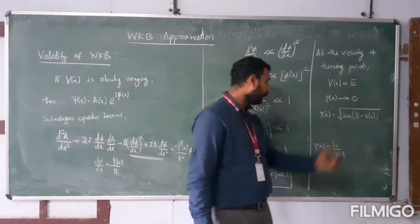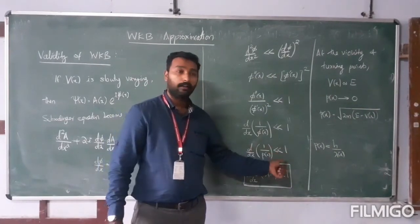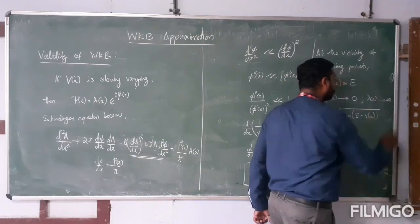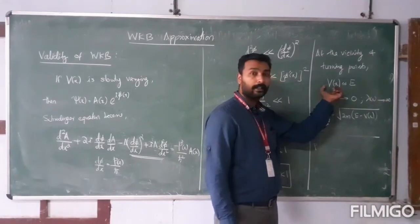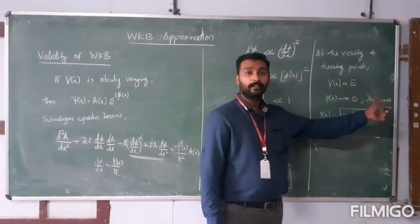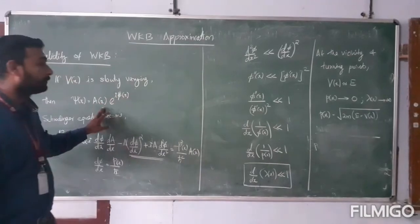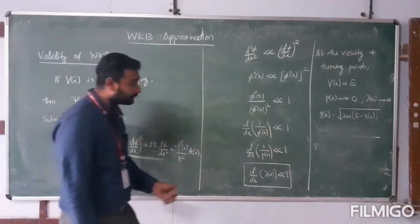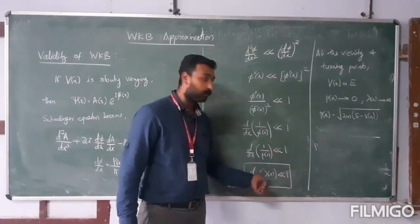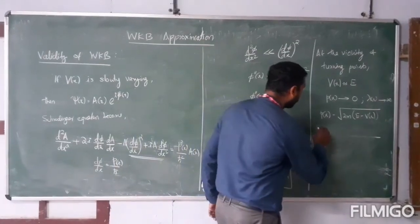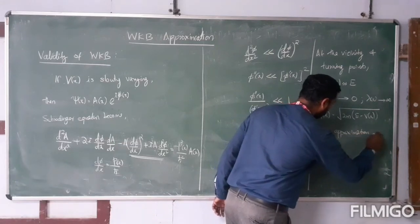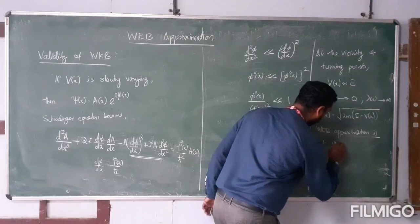If the momentum of the particle tends to zero, then this validity condition will not hold. If the momentum becomes zero, then the de Broglie wavelength itself will tend to infinity. So in the vicinity of turning points — where the potential energy equals total energy, momentum tends to zero, and de Broglie wavelength tends to infinity — the WKB approximation is not valid, because the slowly varying condition breaks down entirely.